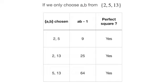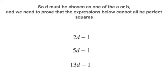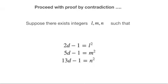This means that we have to prove that one of 2d-1, 5d-1, or 13d-1 is not a perfect square. The setup here is perfect for proof by contradiction. We start by assuming that all 2d-1, 5d-1, and 13d-1 are perfect squares, and show that this assumption necessarily leads to a false result.